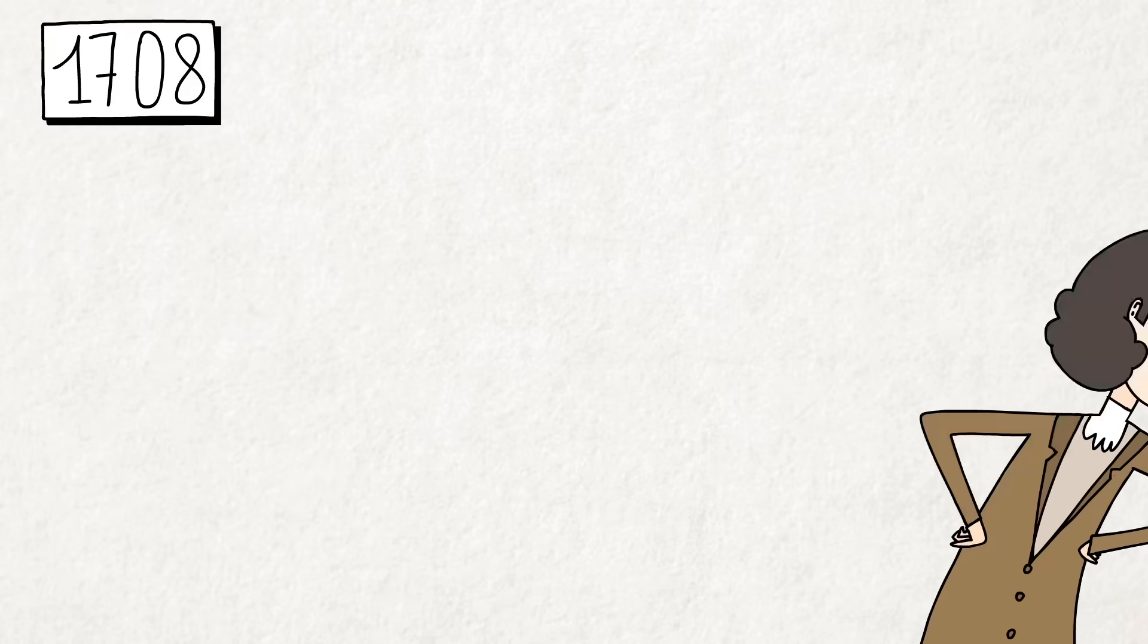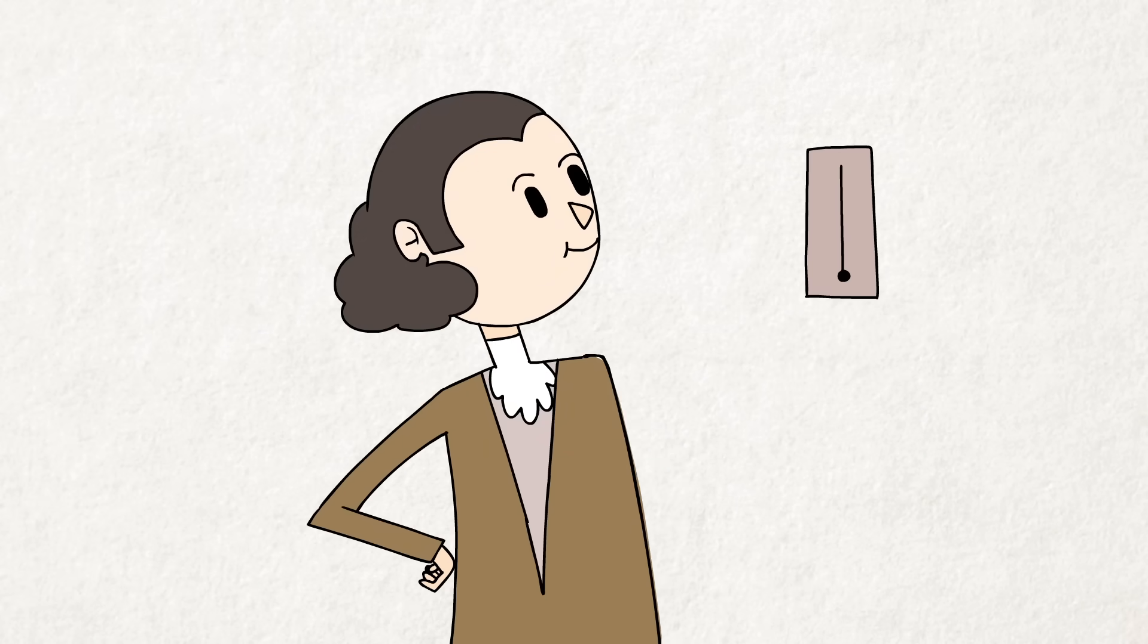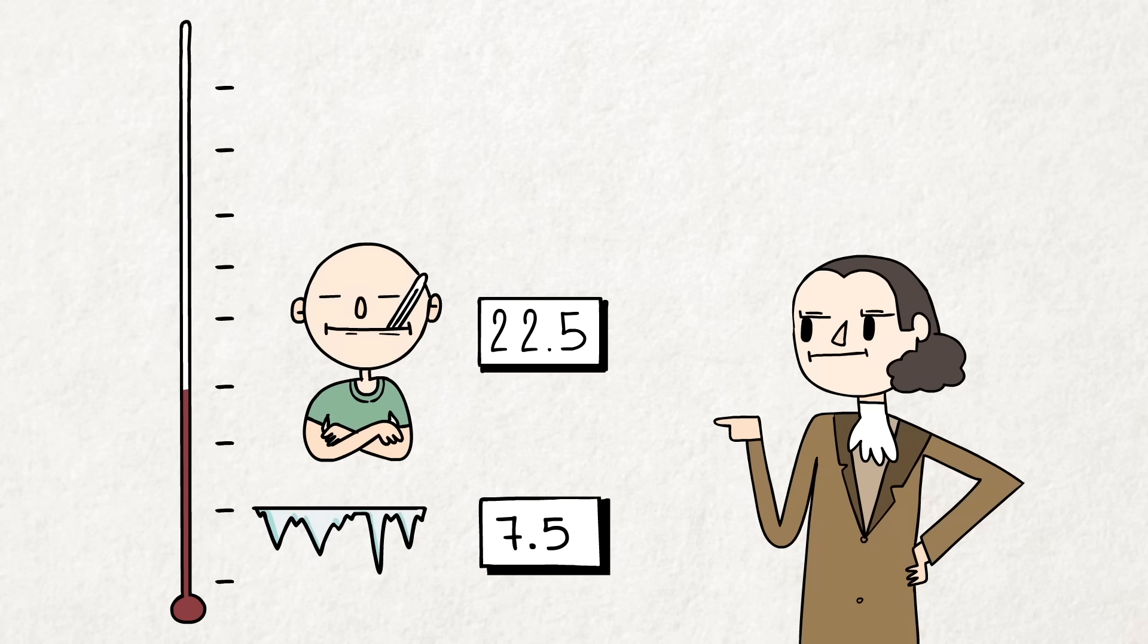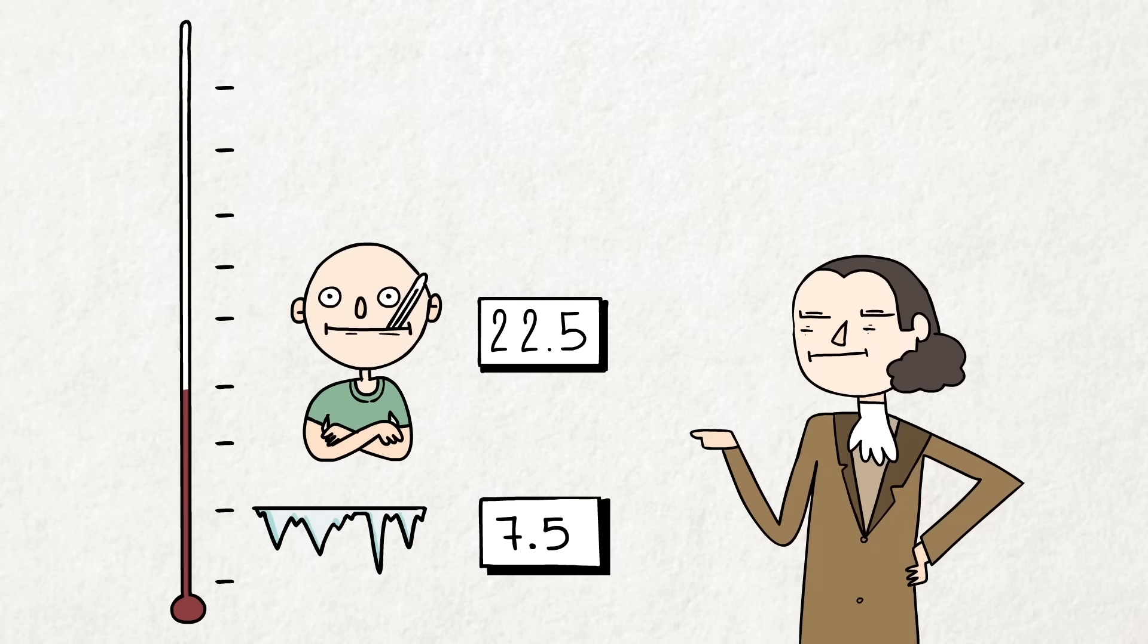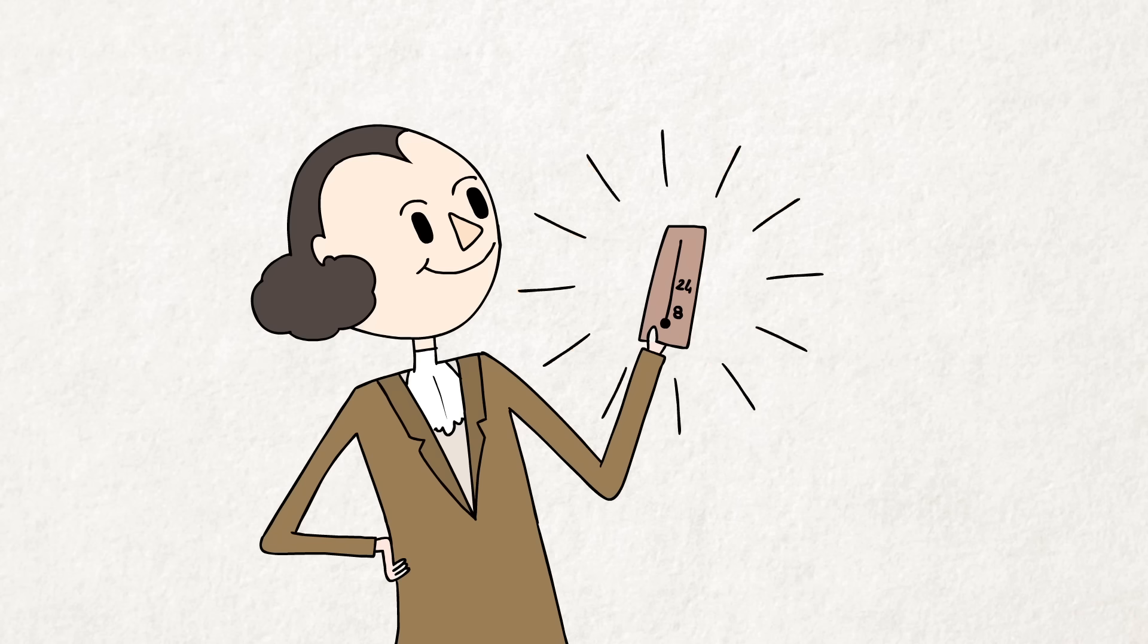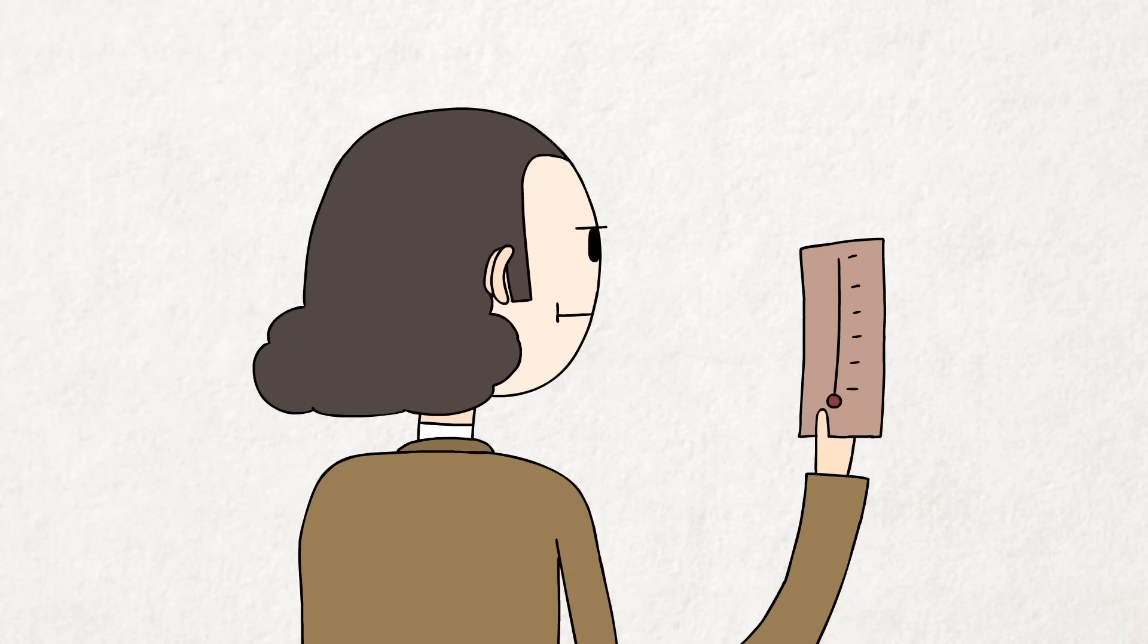So at their meeting in 1708, Fahrenheit learned of Romer's temperature scale and adopted it as his own, adjusting it slightly because he found it inconvenient and inelegant on account of the fractional numbers. So he scaled them up to 8 and 24. And this is the original Fahrenheit scale. He produced thermometers for some time using this scale.